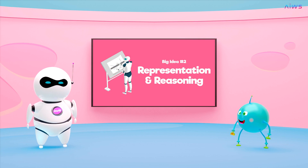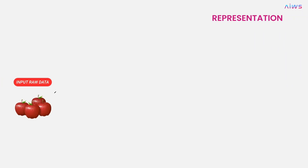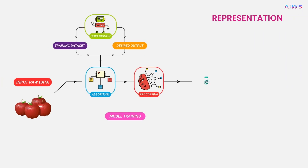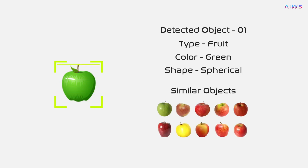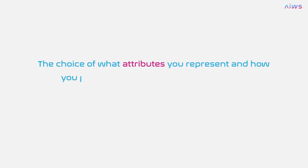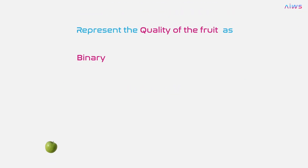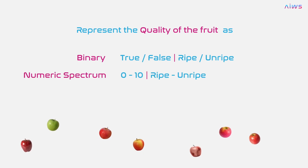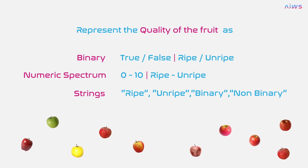The second big idea is representation and reasoning. Agents maintain representations of the world and use them for reasoning. Agents can be robots or software-based, like virtual smart assistants. One way that AI systems represent the world is by storing various properties of an object as data — whether numbers, text, or multimedia. The choice of what attributes you represent and how you present them has a significant impact on how the AI might make decisions. For example, you could represent the quality of a fruit as binary, a numeric spectrum, or as strings, and each choice would have a different impact on how the system reasons about the quality of a type of fruit.